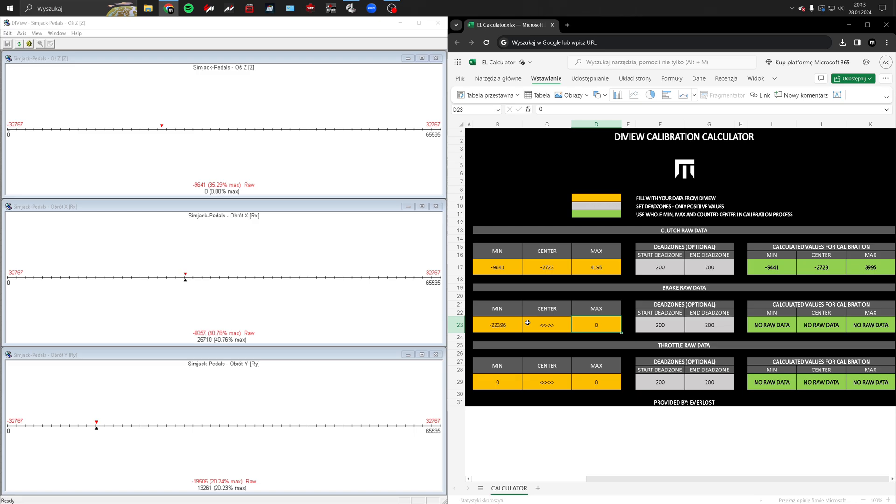For the brake, decide how strong the press should be for your maximum and use that value in the spreadsheet.